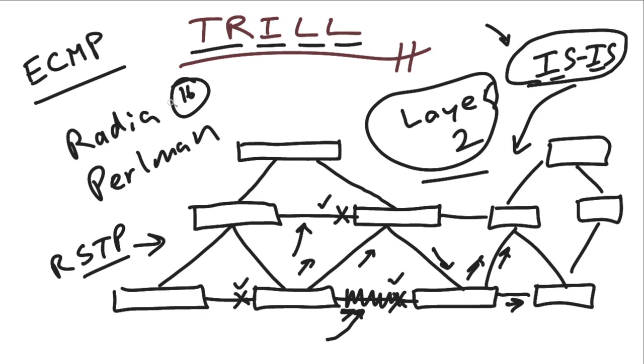Also, by the way, convergence is really, really fast with TRILL. We know Rapid Spanning Tree Protocol really tried to boost convergence times, but just through its very nature, the convergence is blindingly quick in the TRILL technology based on ISIS.